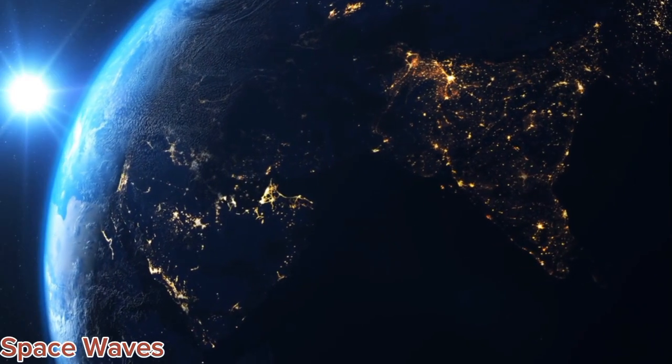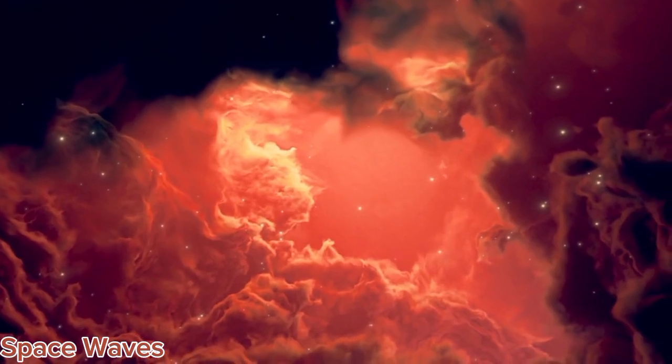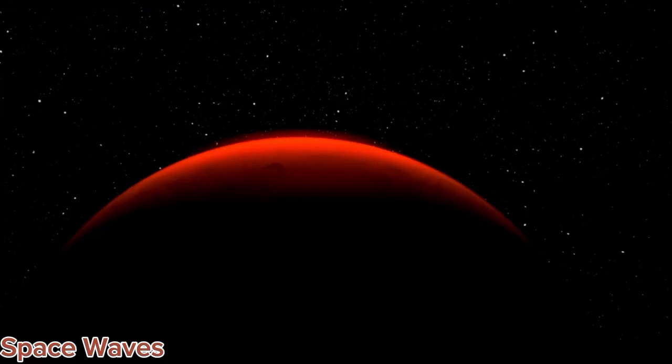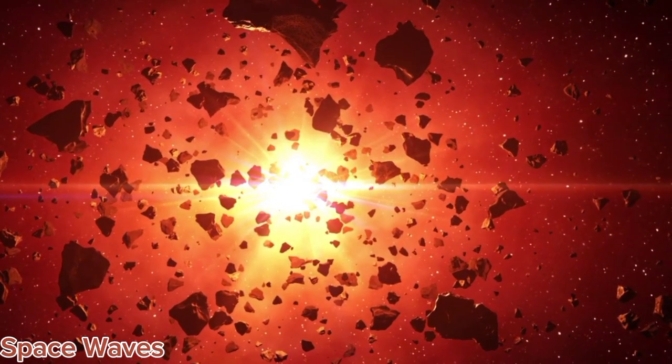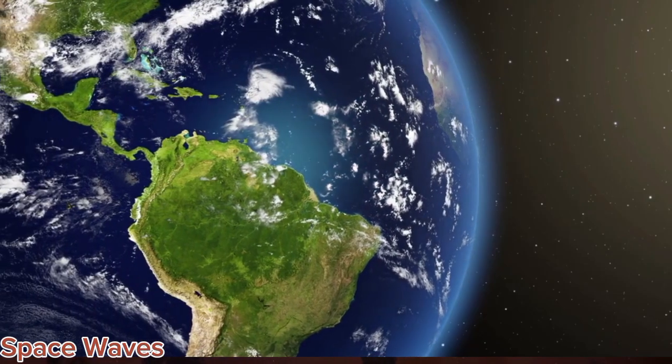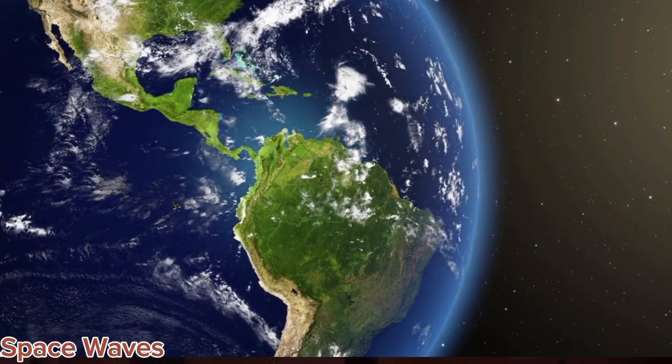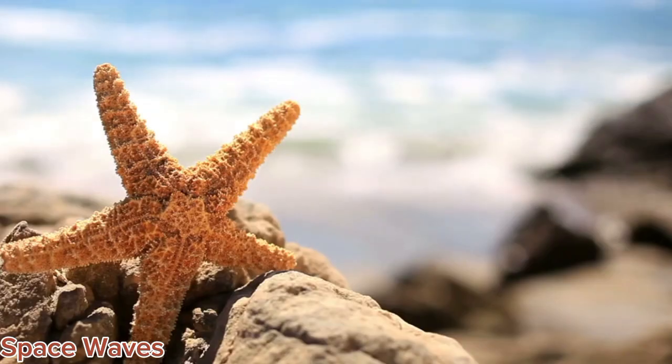Betelgeuse's supernova would likely dominate the night sky, creating an unforgettable celestial spectacle. In terms of potential effects on Earth, Betelgeuse's distance, approximately 642 light-years from our planet, is far enough to prevent significant harm. The primary radiation, such as gamma rays, would dissipate before reaching us. The explosion would also provide a treasure trove of scientific data, offering an unprecedented opportunity to study massive stars and their explosive deaths.